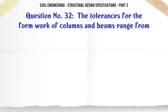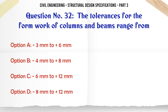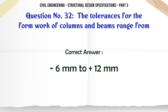The tolerances for the formwork of columns and beams range from: a. 3 mm to 6 mm, b. 4 mm to 8 mm, c. 6 mm to 12 mm, d. 8 mm to 12 mm. The correct answer is: 6 mm to 12 mm.